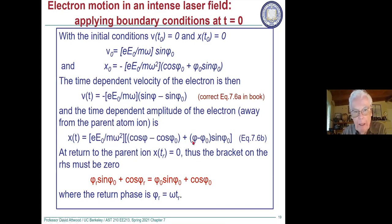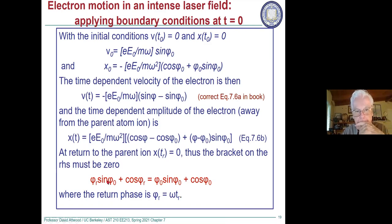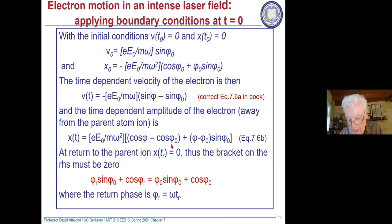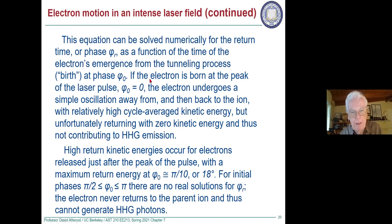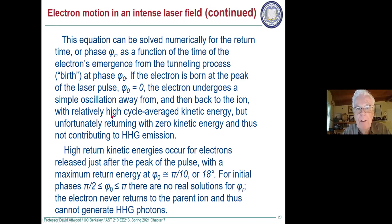The electron could have a very high cycle-averaged kinetic energy as it goes away from the ion and returns — energies up to 50 or 100 eV — but it doesn't necessarily have that much when it returns. If it was born at phi equals zero — the absolute top of the pulse — it actually returns with zero kinetic energy. It starts gaining energy, then as the electric field reverses it starts losing energy, and by the time it gets back to the origin, it has zero.